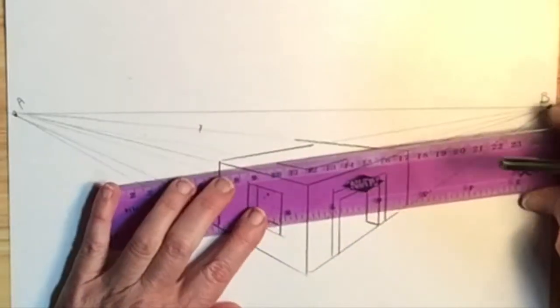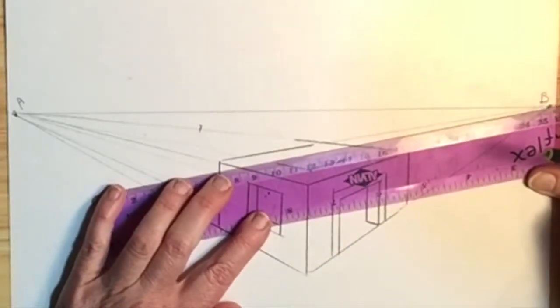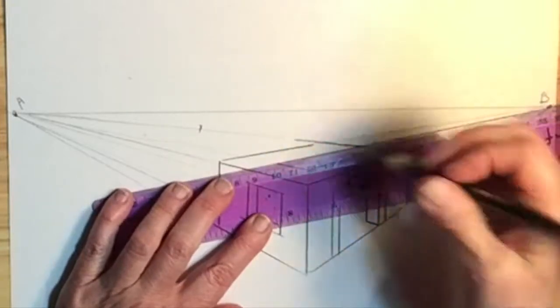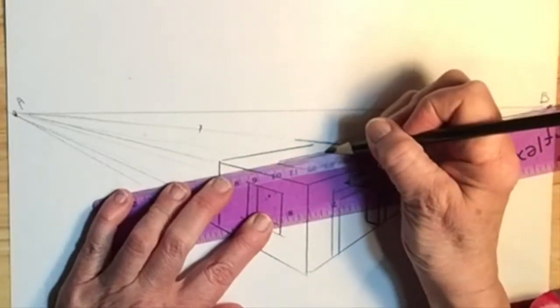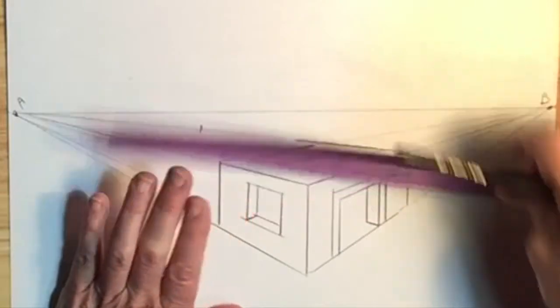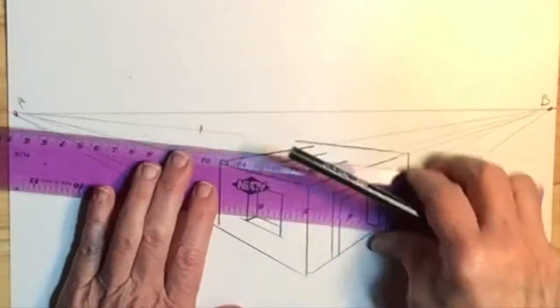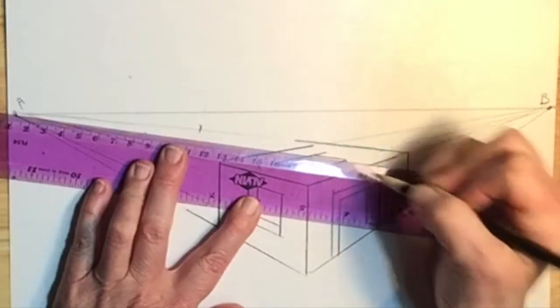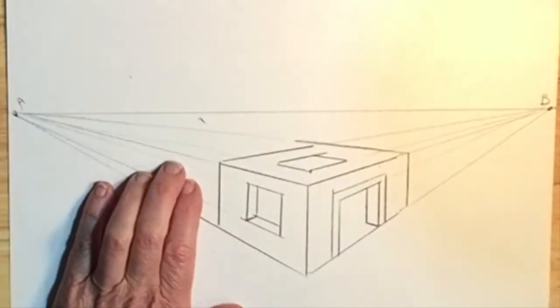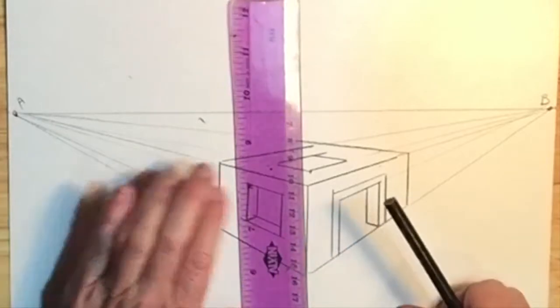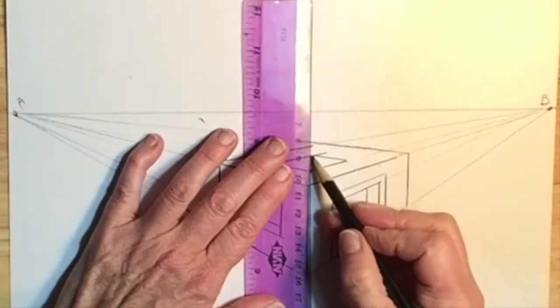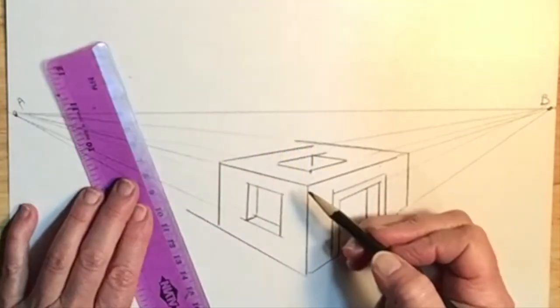And then I basically draw to opposite vanishing points. So I'll draw this line to B, and then I'll draw this line to A. Now to make it look more 3D, I'll add a vertical line in this corner, because you'll be able to see the inside of that, just like that.